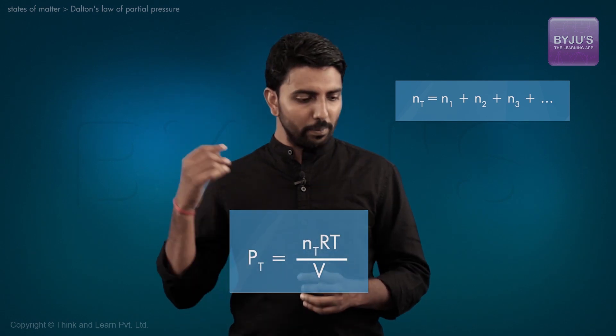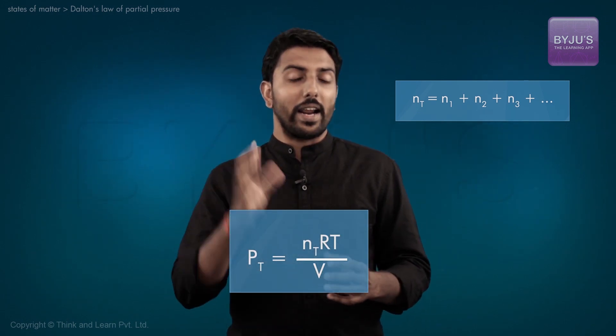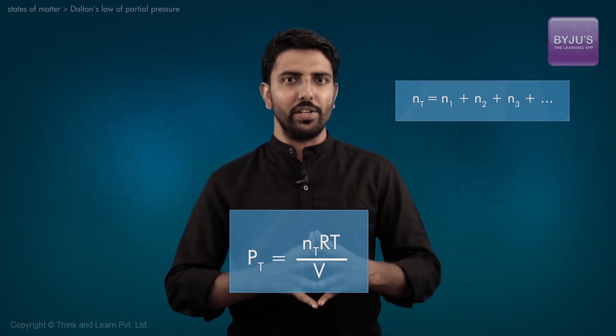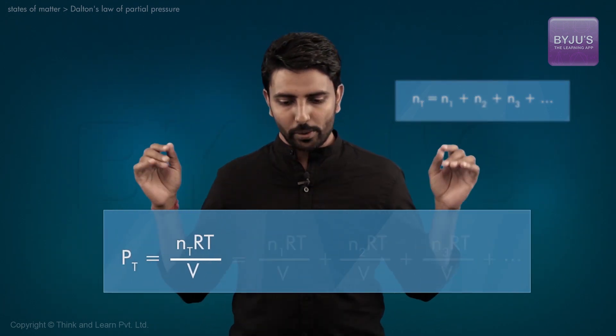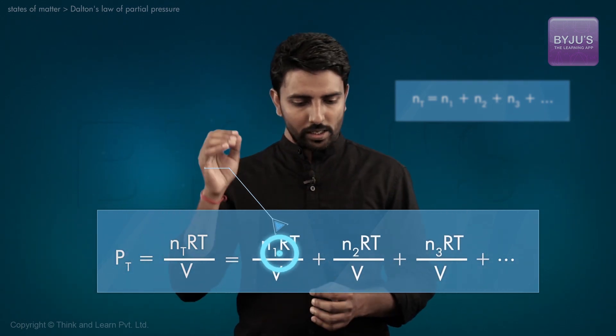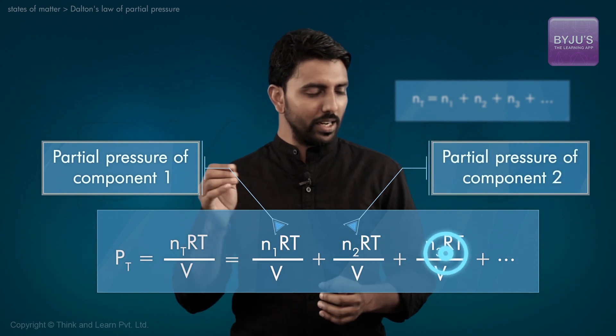In other words, the pressure PT is given by this equation: Nt RT by V. Now within this equation, if we substitute the previous one, we get to expand the expression for PT in terms of PT equals this component plus this component and so on.